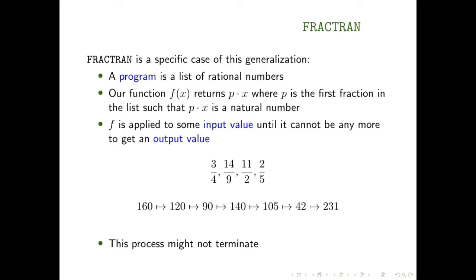We interpret a Fractran program by taking an input and applying our function repeatedly until we can't anymore — until we get a value that can't be multiplied by any fraction in the list. That resulting value is our output. For example, starting with 160, the first applicable fraction is three-fourths, giving 120; then 120 times three-fourths gives 90; 90 can't use three-fourths but can use 14/9, giving 140; and 140 times three-fourths gives 105.